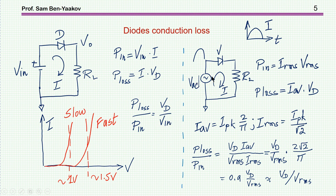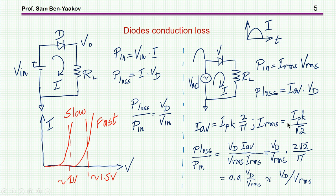What happens if the input is sinusoidal? Considering half a period — the positive one — the input will be IRMS times VRMS. Since I'm assuming a DC voltage on the diode, the loss will be the average current times the diode voltage. The average is I-peak times 2 over pi, and IRMS is I-peak over square root of 2. Therefore, the ratio between the diode loss and input power is approximately 0.9 × VD over VRMS, which we can approximate to VD over VRMS.